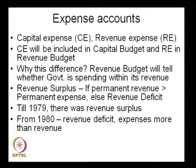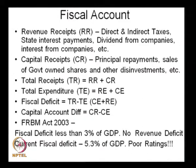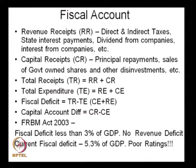Revenue expenses are similar to your recurring annual expenses. Revenue receipts are the annual incomes that the government receives — from direct and indirect taxes, interest payments it receives from states, dividends from companies in which the government is a shareholder, and the interest that companies pay on loans received from the government. There are various ways by which the union government receives its annual income, and all of this comes under revenue receipts.